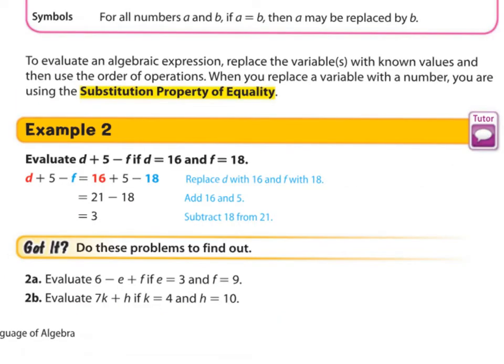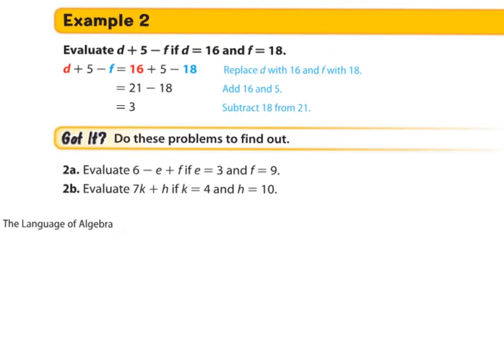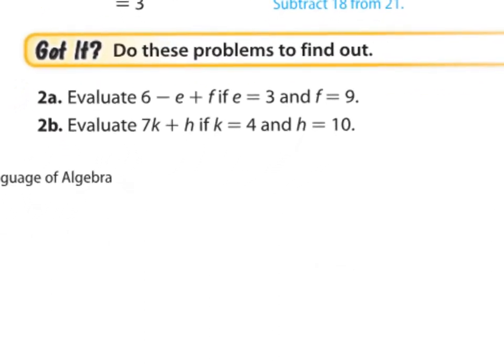So now let's work with evaluating algebraic expressions. And let's read. To evaluate an algebraic expression, replace the variables with known values and then use the order of operations. When you replace a variable with a number, you are using the substitution property of equality. Here we go. Example 2. They're telling us that evaluate, so solve, for d plus 5 minus f. But we don't know what d and f are. They tell us here. D is 16 and f is 18. So here we have d plus 5 minus f. What they asked us to do. We replace those variables. Remember, d is 16 and f is 18. And then we solve with order of operation. This is addition and subtraction, so we simply do it left to right. 16 plus 5 is 21. Minus 18 is 3.